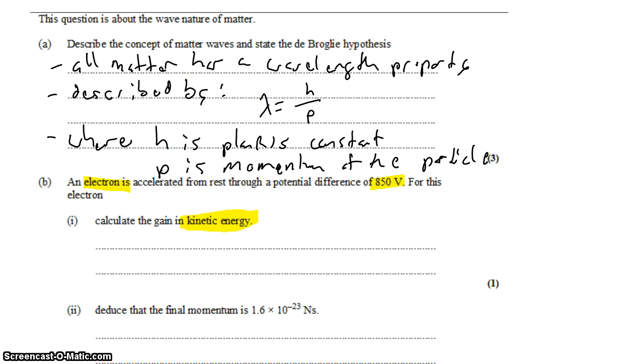It's gaining kinetic energy from the electric potential energy, which we can calculate using the voltage, because voltage is energy per unit charge. If we multiply the voltage by the charge, we get the total energy. The charge of an electron is 1.6 times 10 to the negative 19 coulombs, and the voltage is 850 volts.